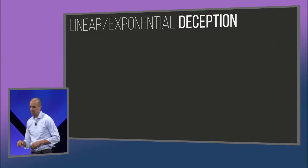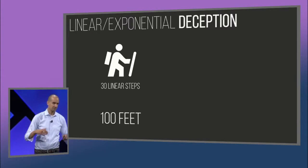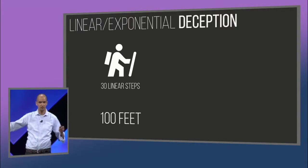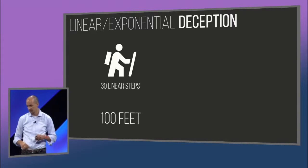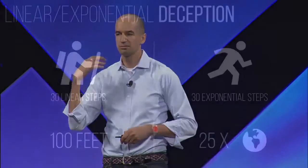Here's a simple example. Imagine you're taking 30 linear steps — one step after the other. In metric, that's about 30 meters, or around 100 feet — probably from me to the end of this room. Now imagine taking 30 exponential steps, where every step is twice as far as the last one. The typical response is something like a mile, or maybe from here to Europe. In reality, it's 25 times around this planet — to the moon, back, and halfway to the moon again. That is exponential deception. You're just not wired to really understand what exponential means.